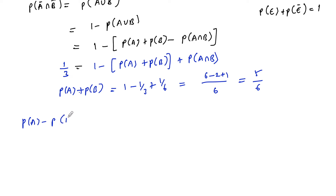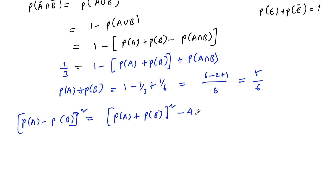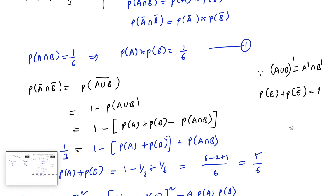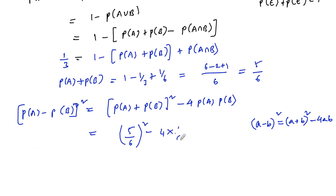Now consider P(A) − P(B) whole square. Using the property (a−b)² = (a+b)² − 4ab, we can write: [P(A) + P(B)]² − 4·P(A)·P(B) = (5/6)² − 4·(1/6) = 25/36 − 4/6.